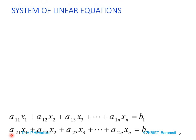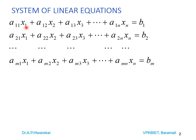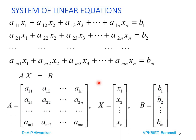We consider a system of linear equations: a11·x1 + a12·x2 + ... + a1n·xn = b1, a21·x1 + a22·x2 + ... + a2n·xn = b2, up to the m-th equation am1·x1 + am2·x2 + ... + amn·xn = bm. This system can be written in matrix form as Ax = b, where A is the m×n coefficient matrix, x is the column vector of unknowns x1, x2, ..., xn, and b is the right-hand side vector b1, b2, ..., bm.